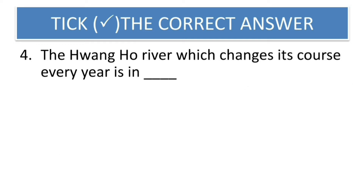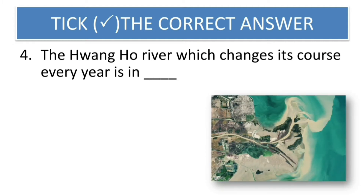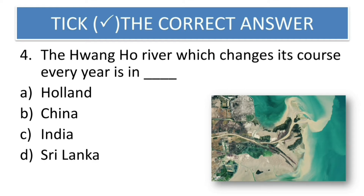Fourth question: The Vangvo river, which changes its course every year, is in which country? Options are Holland, China, India, or Sri Lanka. From the name of the river, you can easily guess the answer. China is the correct answer. Vangvo river is in China. This is a satellite image of the Vangvo river — it changes its course every year.